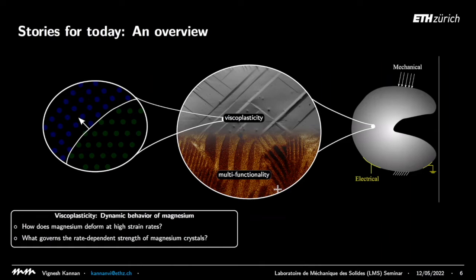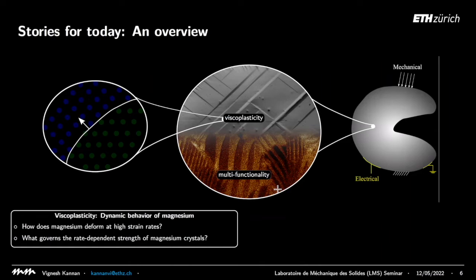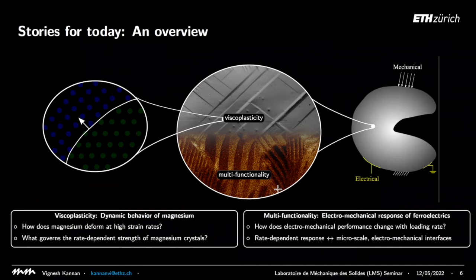We'll be talking about two specific problems today: one from viscoplastic deformation of magnesium — what happens when you take magnesium and deform it at high strain rates, at extremely short timescales — in the context of a specific mechanism called deformation twinning. A second question will be in multifunctionality, where we look at ferroelectric materials and electromechanical systems.